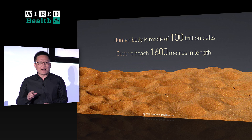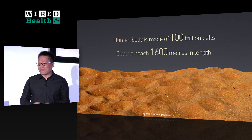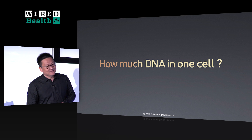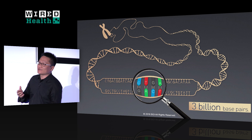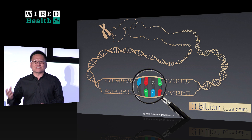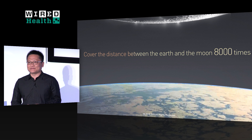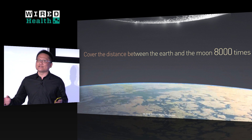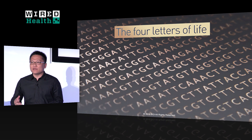100 trillion cells can cover a beach with the length of 1.6 kilometers. My second question is: how much DNA is in one cell? The answer is 3 billion base pairs. So our genome size is just 3G, consisting of DNA helices in one cell. The length of total DNA can cover the distance between the Earth and the Moon 8,000 times. This is our DNA.